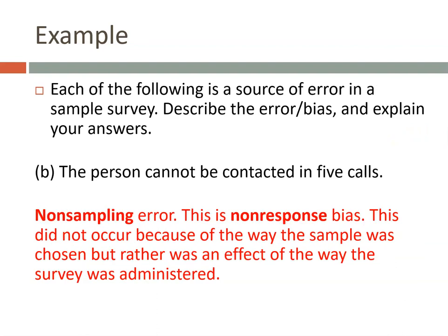Second example: a person cannot be contacted after five calls. This is a non-sampling error — specifically non-response bias. It's not your fault they can't be contacted. This did not occur because of how the sample was chosen, but rather because of how the survey was administered. You can do everything right and still not reach them.